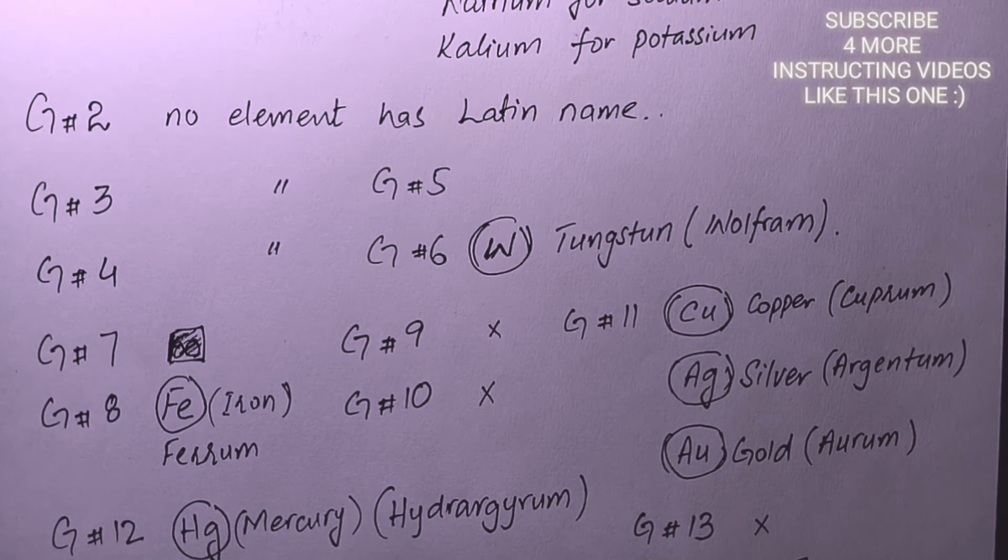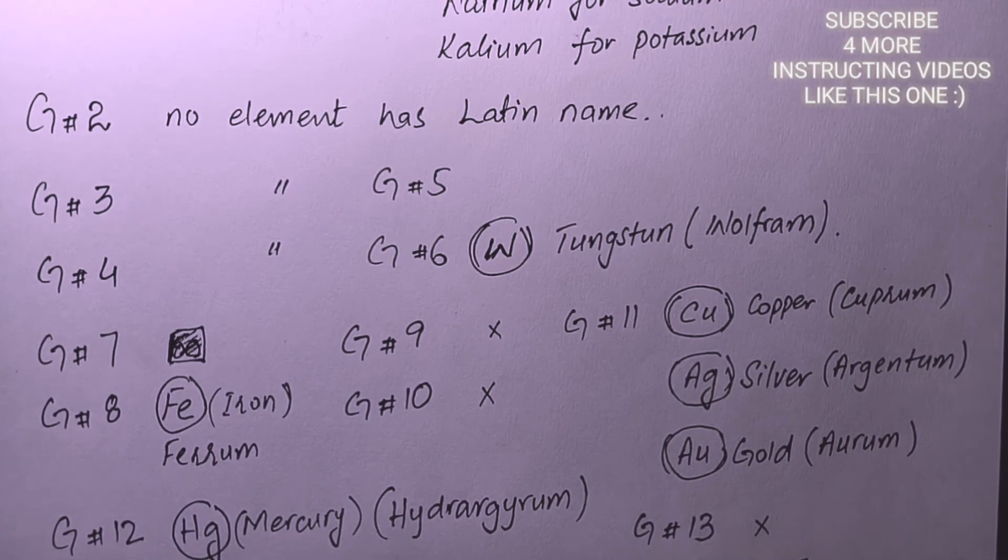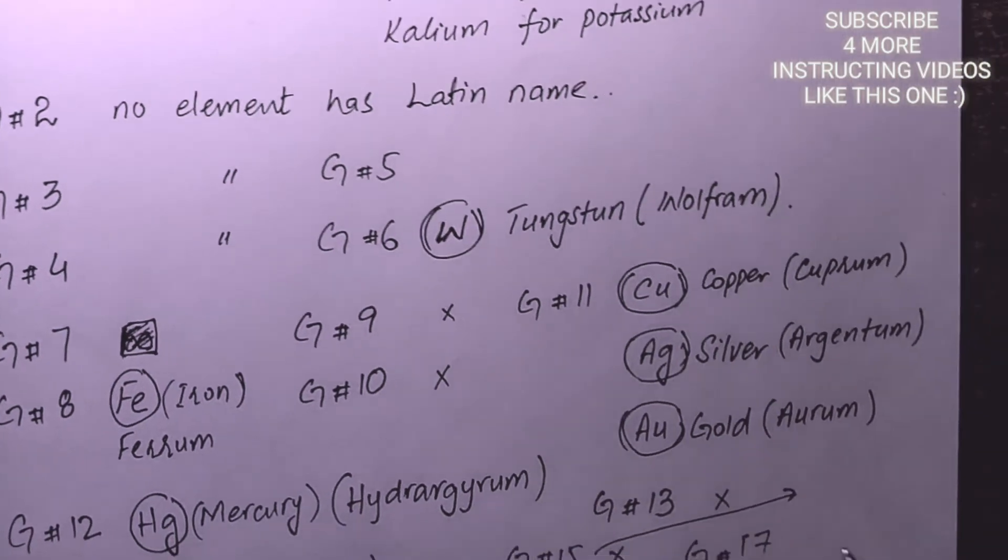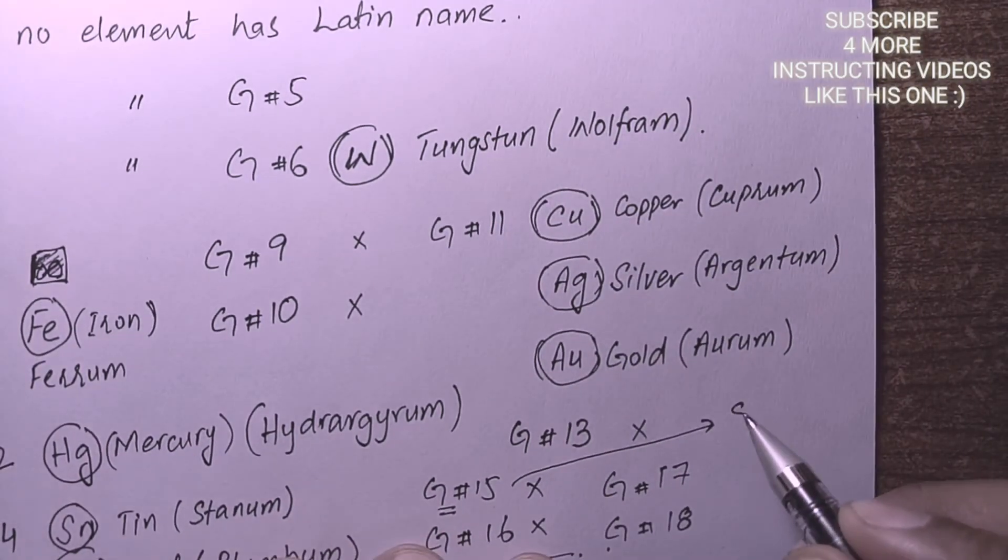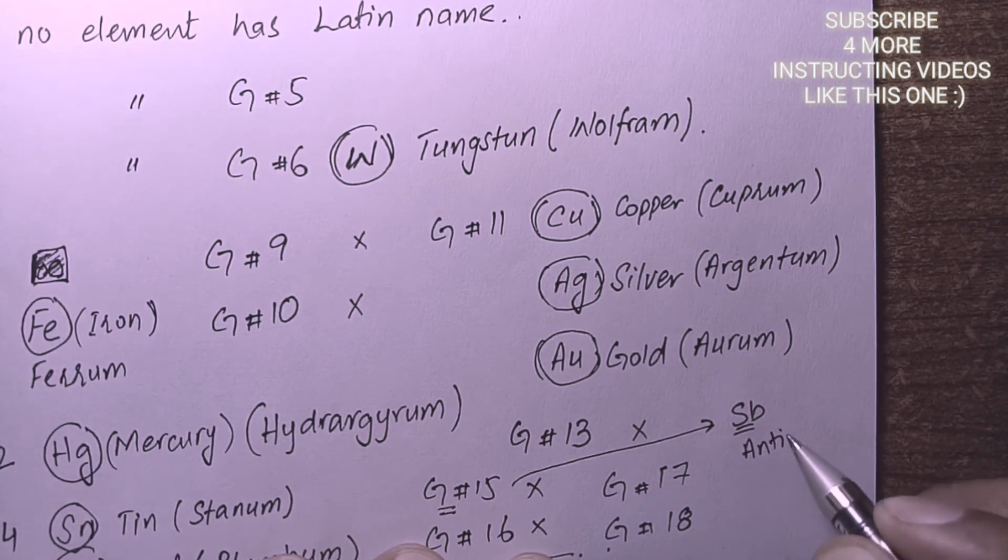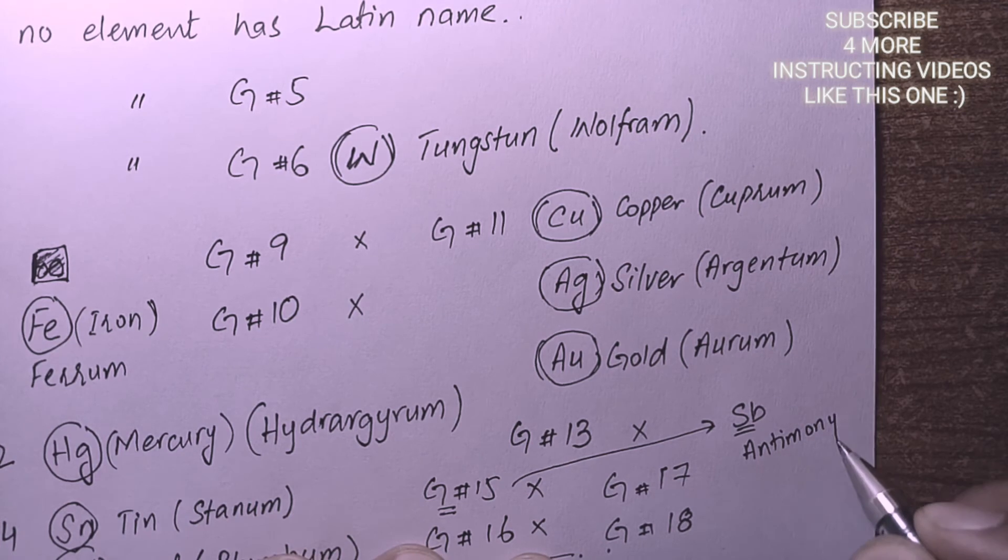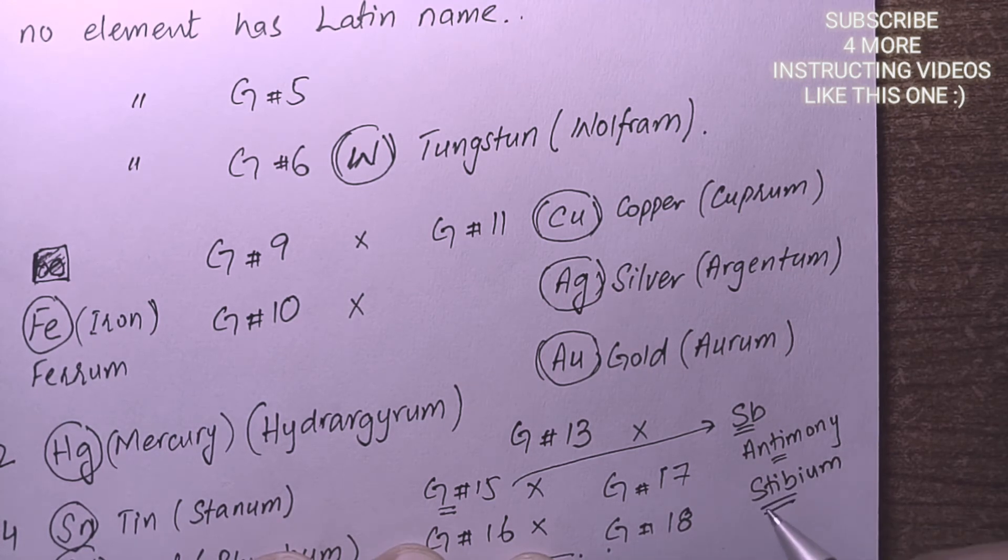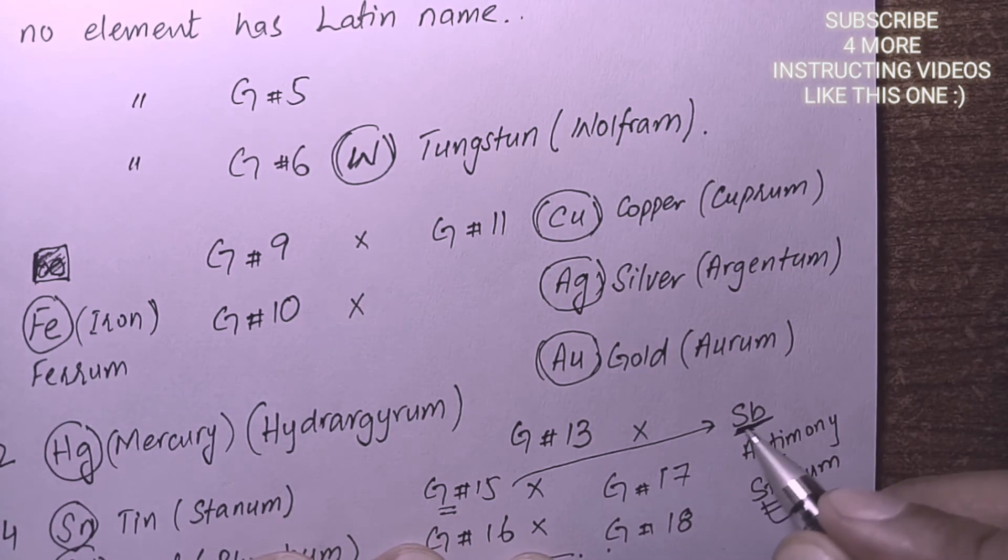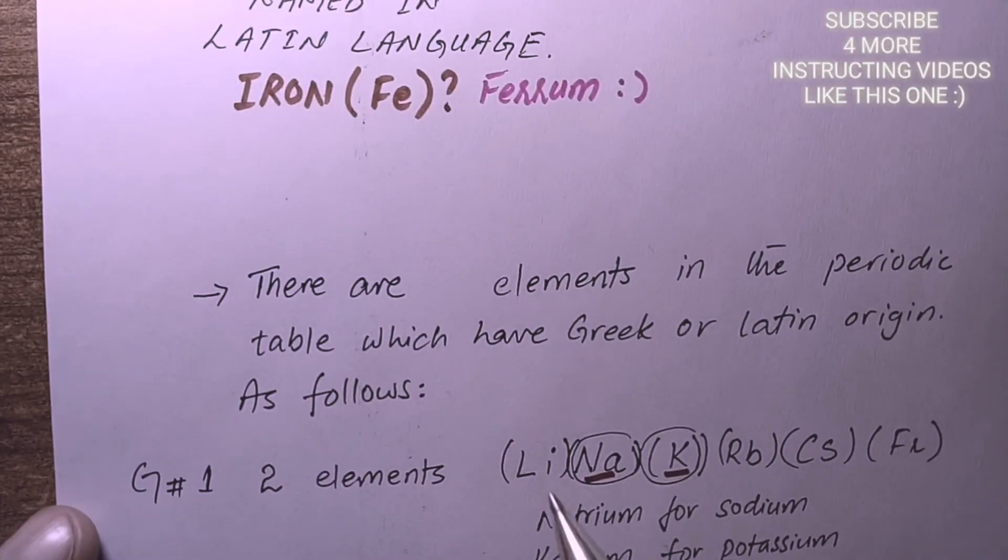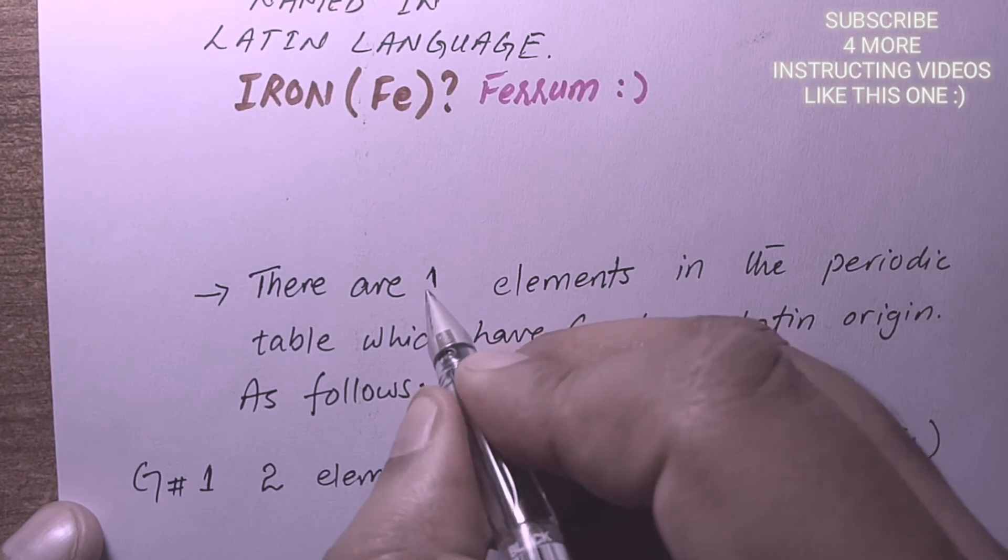But I really want to add one more element to group 15, that is Sb. Sb is basically antimony in normal words, but it is Stibium, so that's why it has a symbol of Sb. The total number of elements which have Latin names are 11 in the periodic table.